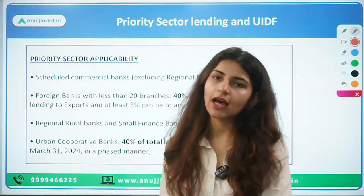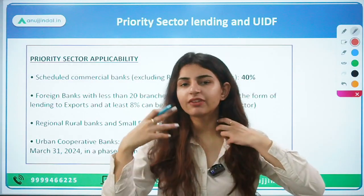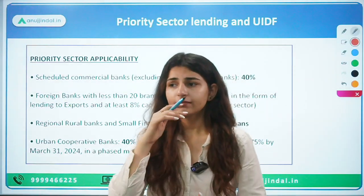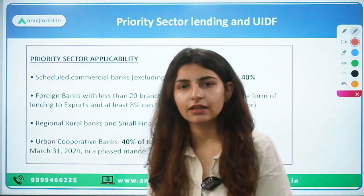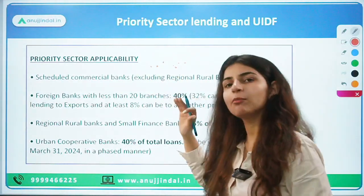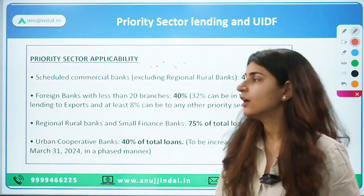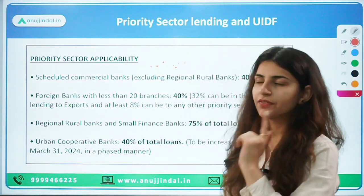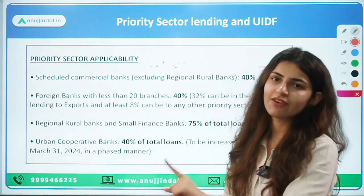Certain PSL targets are given to different types of banks. These targets are very-very important and everyone preparing for the exam should know them. This topic is important for descriptive, objective, and interview phases. The data is also easy to remember. If a descriptive question comes on priority sector lending, or even a comprehension, you should be able to answer it well.